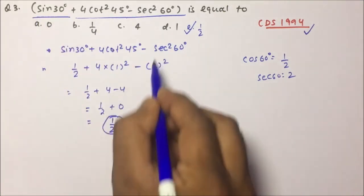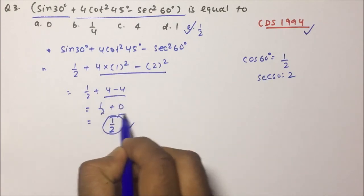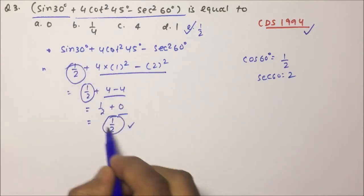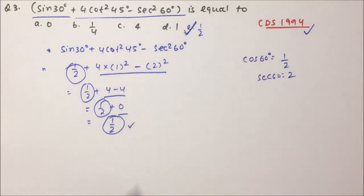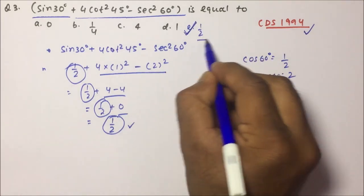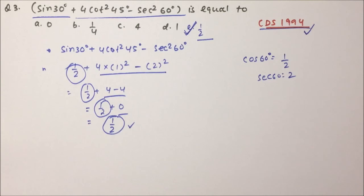What we have done is simply substitute the values, and the 4 cot²45° and sec²60° terms cancel each other to 0, leaving only the sin 30° value as our answer, which is 1/2. This question was asked in CDS 1994. All three questions are very important. I hope you understood all the questions and their solutions. Thanks a lot friends for watching the video.